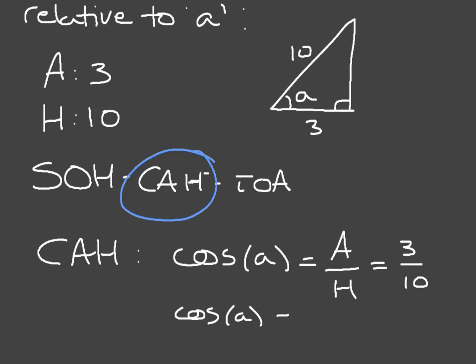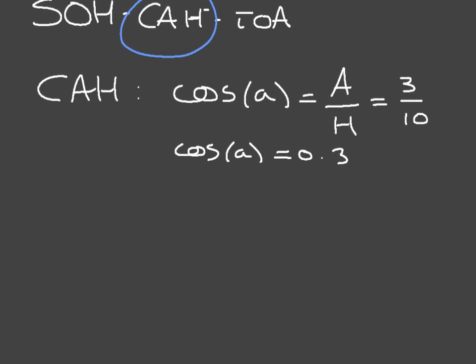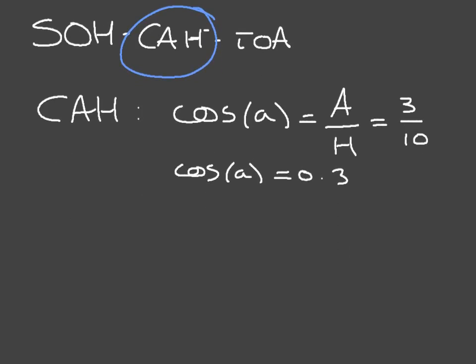Cosine of A is equal to 0.3. Our first step is done. But what we were looking for was the actual angle A — how do we get A? What we're trying to do is extract this angle A from the cosine, and the way we do this is by using what we call inverse cosine. On a Casio calculator, you press Shift then Cos; on a Texas Instruments calculator, you press the Second button followed by Cos.